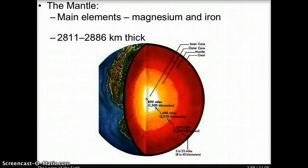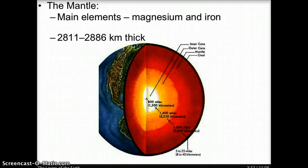The second layer from the surface is called the mantle. The mantle is made of rock that is very hot but solid. The main elements in the mantle are magnesium and iron. The mantle is the thickest of all the layers, ranging from 2,811 kilometers to 2,886 kilometers thick. In the diagram, the mantle is represented by the red color.